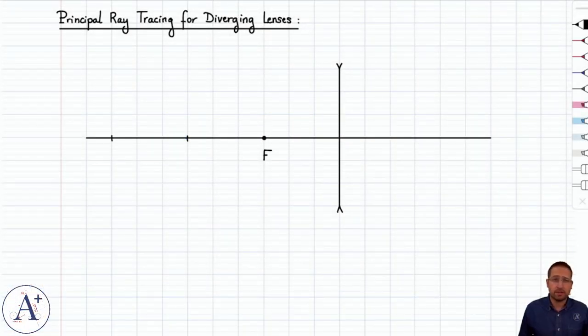We just saw that for converging lenses the object distance dictates the type of image that you get through the converging lens.